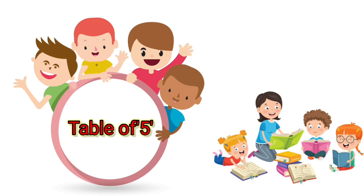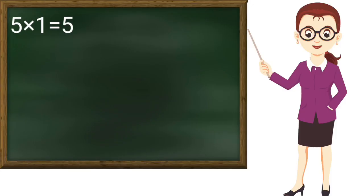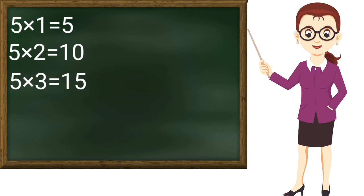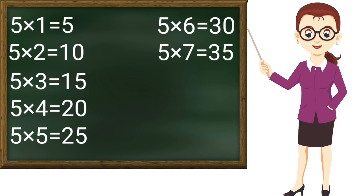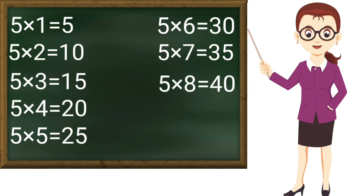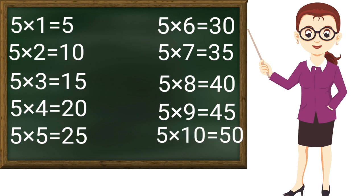Now table of 5: 5 ones are 5, 5 twos are 10, 5 threes are 15, 5 fours are 20, 5 fives are 25, 5 sixes are 30, 5 sevens are 35, 5 eights are 40, 5 nines are 45, 5 tens are 50. Thank you ma'am.